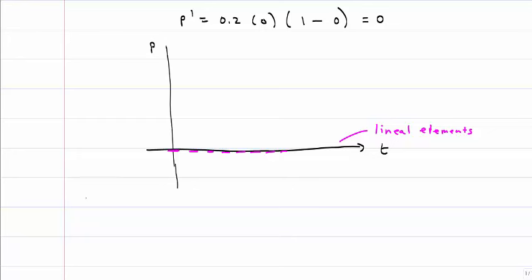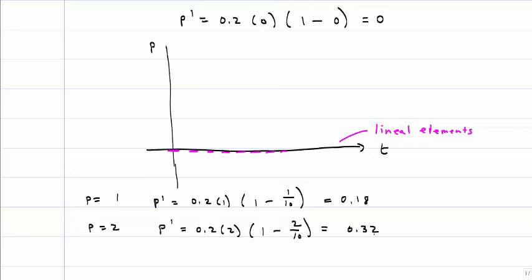Let's look at what happens when p is equal to 1. In that case, p prime is equal to 0.2 times 1 times 1 minus 1 divided by 10, and this is equal to 0.18. If I looked at p is equal to 2, we find that the slope would be equal to 0.32. If I looked at p equals negative 2, then I find the slope is equal to negative 0.48.